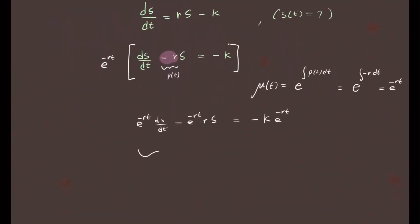Now, the left-hand side right here is your derivative with respect to time of mu of T, e to the negative Rt times S of T. You can check it out with the product rule. On the right-hand side, it's just negative K e to the negative Rt. Now, our goal is to solve for this, so we're going to integrate both sides with respect to T.